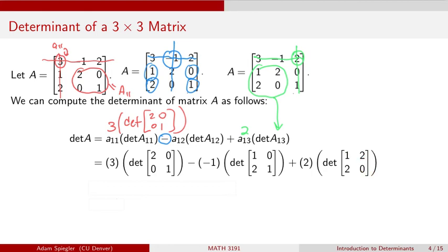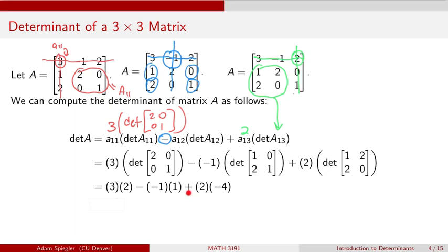Using our definition for determinants of two by two matrices: 3 times (2×1 − 0×0) minus (-1) times (1×1 − 0×2) plus 2 times (1×0 − 2×2). That gives us 3 times 2, minus the entry A12 was -1 so that term becomes 1, then adding 2 times (0 − 4), which is -4. Combining all values gives us a determinant of minus one.